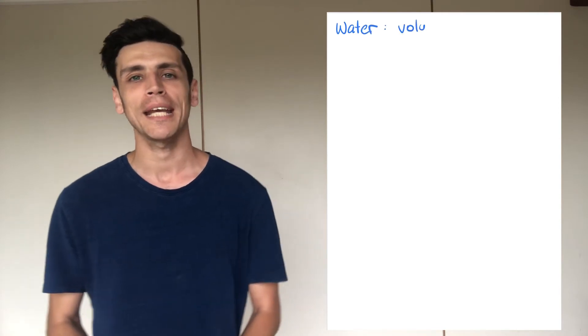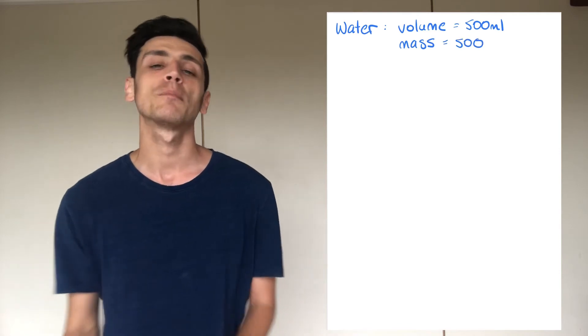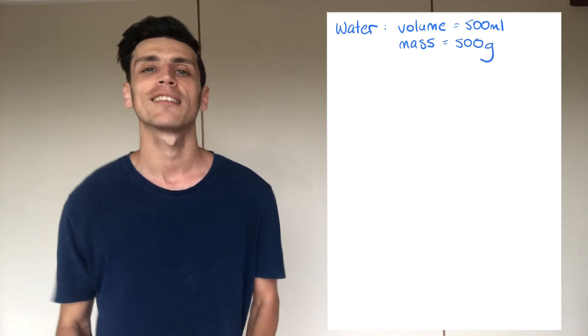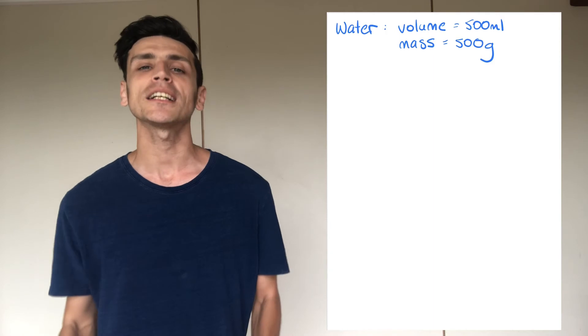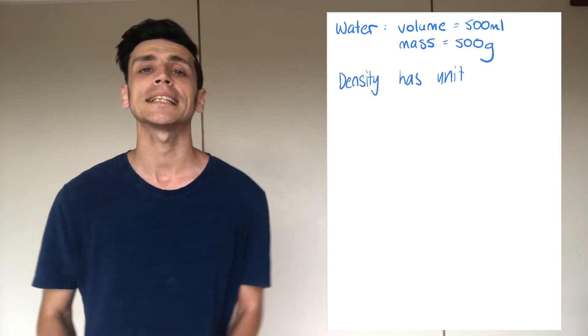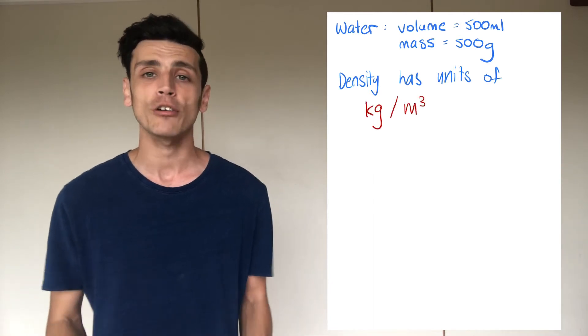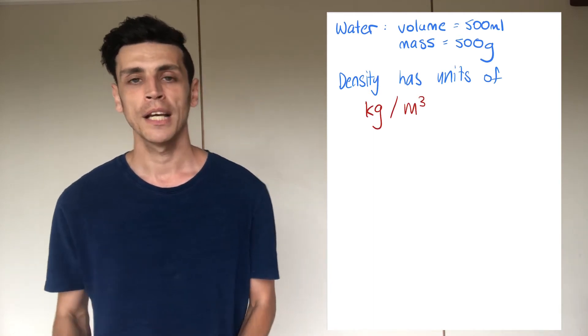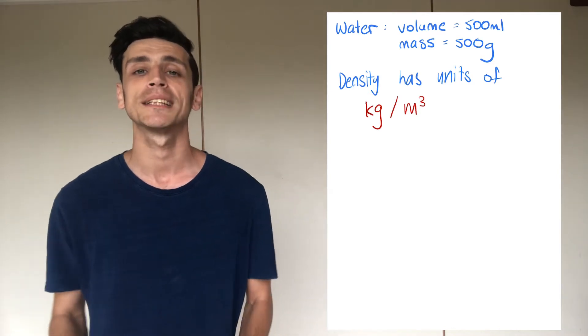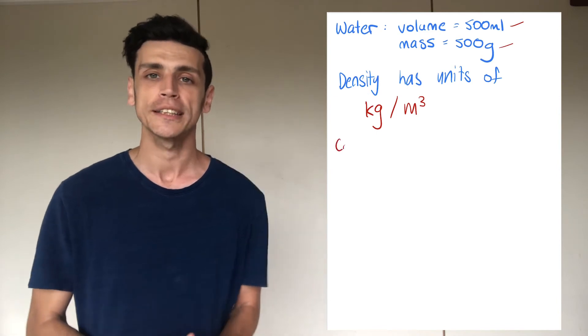We've got our two measurements: we've got our volume being 500 milliliters and we've got our mass being 500 grams. Now we need to put these back into our formula to find the density. But we can't just simply put these two values into the formula because density is actually a ratio of units given as kilograms per cubic meter. So we're going to have to change these two measurements in order for it to satisfy our equation, or in this case our density units.